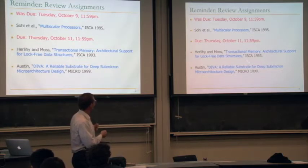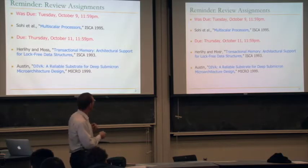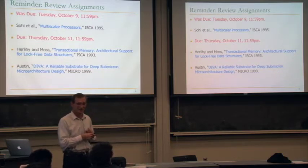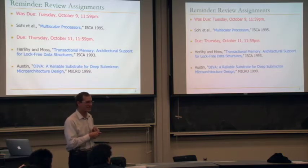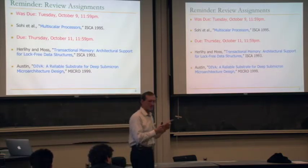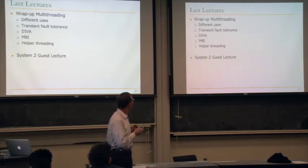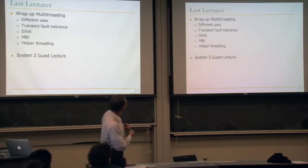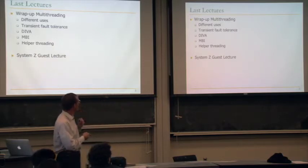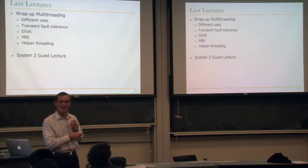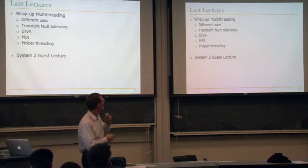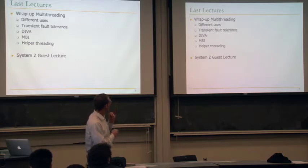You have two other papers: one we've already covered, the DIVA paper by Todd Austin, and the other is by Herlihy and Moss on transactional memory. Basically this is a proposal that's somewhat similar to what's implemented in System Z, at least the small transaction part of it. What did we do in the last lecture? We wrapped up multi-threading, although you'll see that we haven't fully wrapped up multi-threading — we'll keep coming back to it.